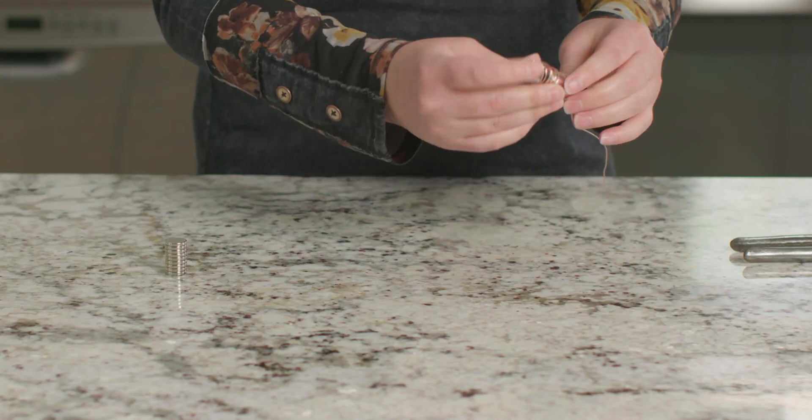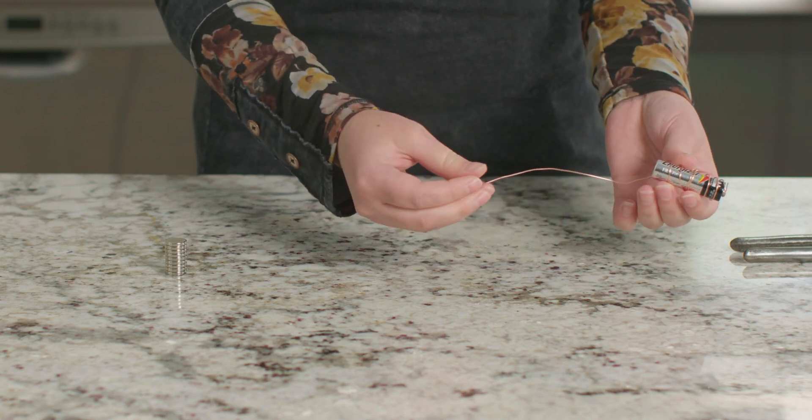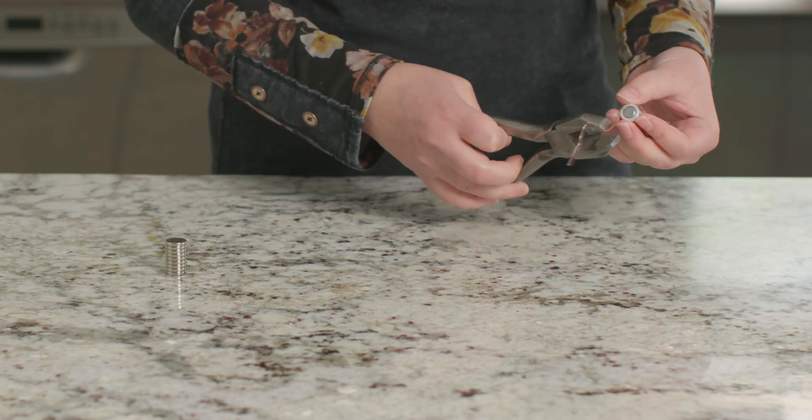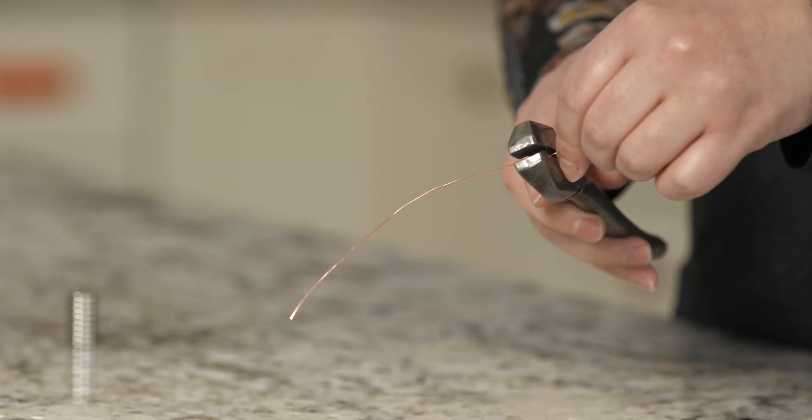Then, we can stretch our coil out so it fits the length of our battery with the other end just below the bottom of the battery. You can trim your wire if necessary.